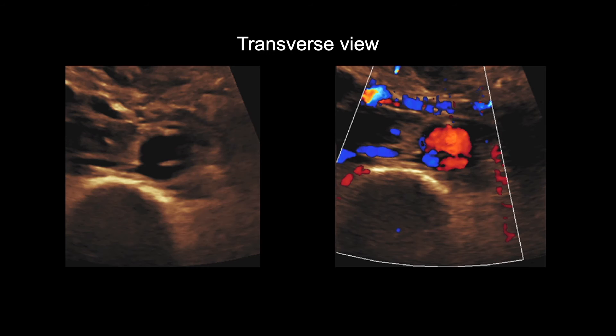Here is another example of a dissection in transverse view. Dissections appear as a bright line on black and white ultrasound images, but when color is added, they appear as a linear color void.